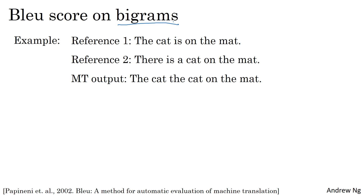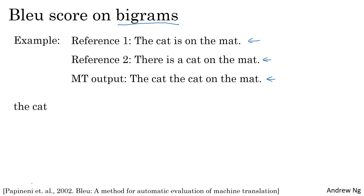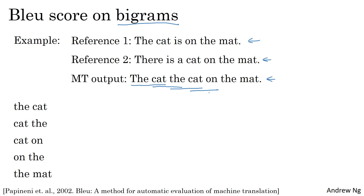Let's continue our example. We have the same reference one and reference two, but now let's say the MT system has a slightly better output: 'the cat the cat on the mat.' Still not a great translation, but maybe better than the last one. The possible bigrams are: 'the cat,' 'cat the,' 'the cat' again, 'cat on,' 'on the,' and 'the mat.' So these are the bigrams in the machine translation output.